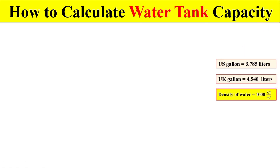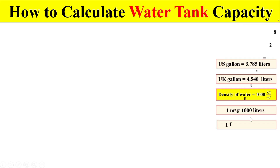Dear students, if you are interested to calculate the weight of water, it is important to know that the density of water is 1000 kg per cubic meter. Remember, if you have a volume of one cubic meter it contains 1000 liters, and if you have a volume of one cubic foot it contains 28.31 liters.